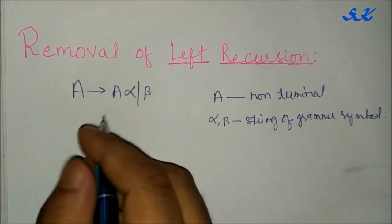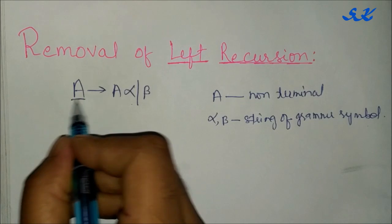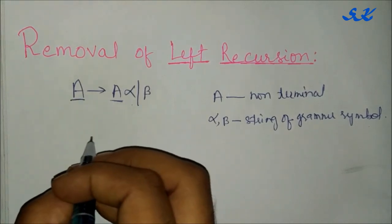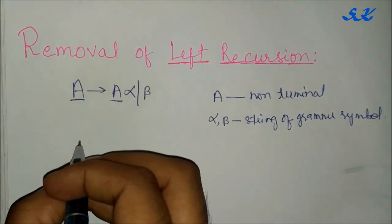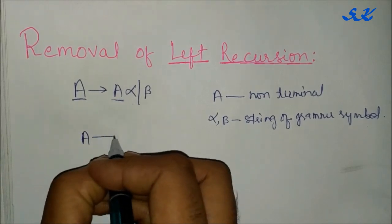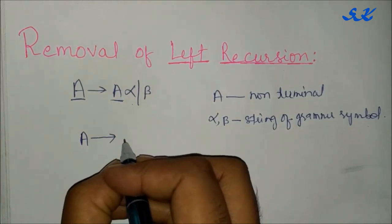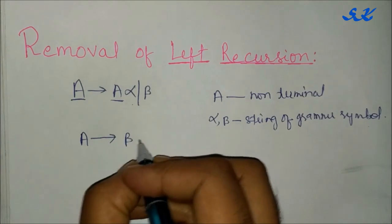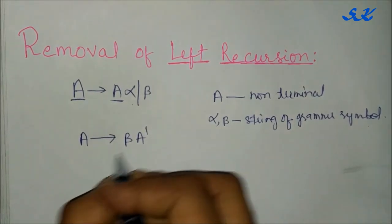To remove left recursion A to A alpha, we use the production A to beta A-dash, and A-dash will be alpha A-dash or epsilon.